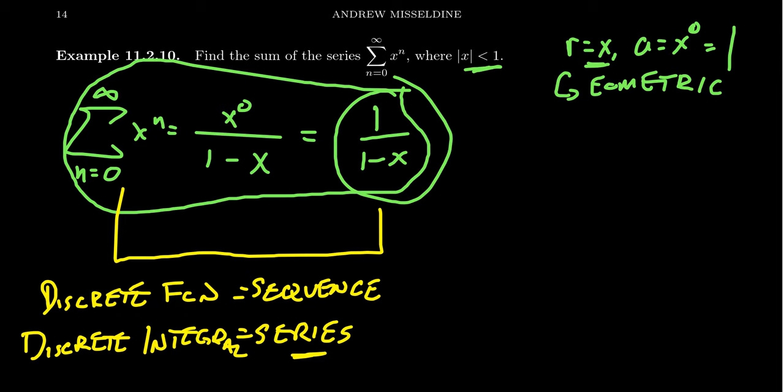Now in a Riemann sum we want our rectangles to get thinner and thinner so that delta x gets smaller and smaller. In the discrete setting we can't just make the terms get closer and closer because there's this gap of one that sits between all the terms. And so because of that, this series we really don't want to think of it as integrals. These are discrete integrals and that's why we study series in Calculus 2.